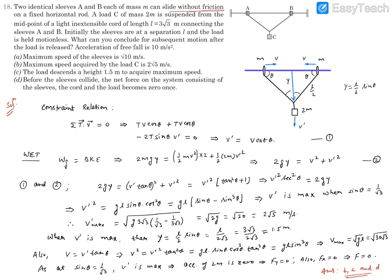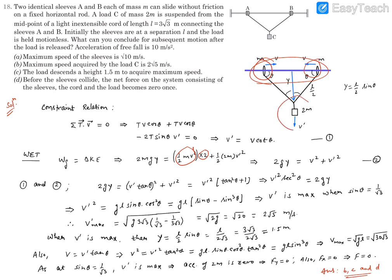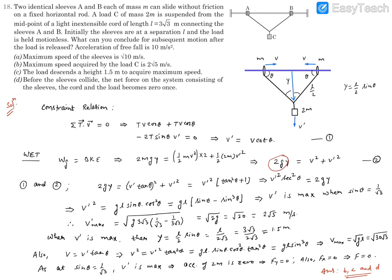Since there is no friction, we use energy conservation. Work done by gravity equals the change in kinetic energy. Work done by gravity is 2Mgy. This equals the kinetic energy of the entire system: half M·v² for each sleeve (times 2) plus half·2M·v'². After cancelling M, we get: 2gy = v² + v'². This is a second important equation relating v, v', and y.